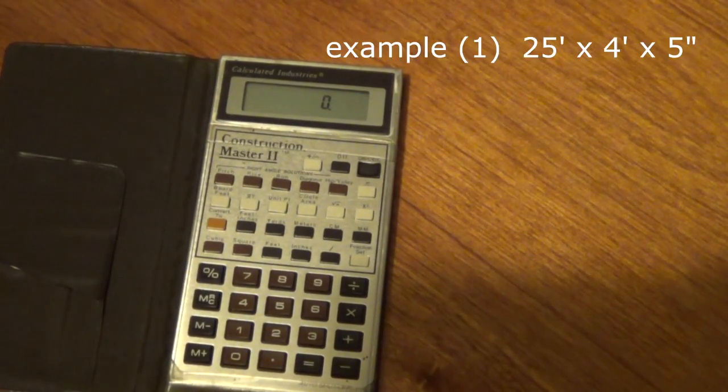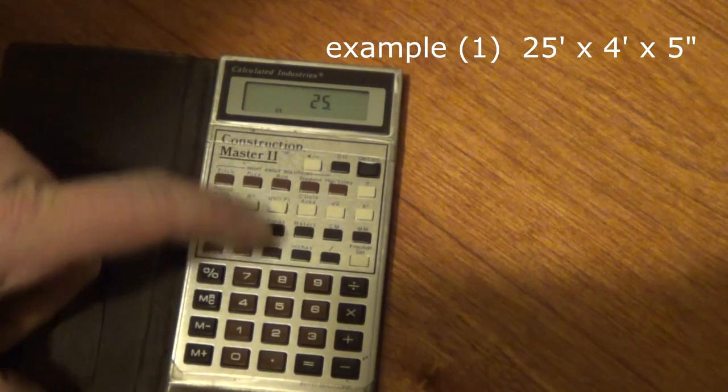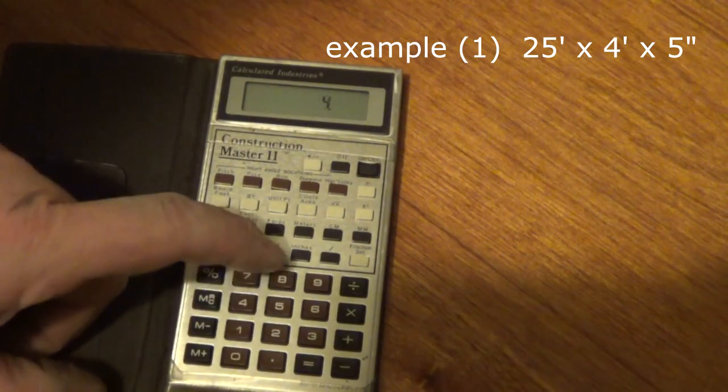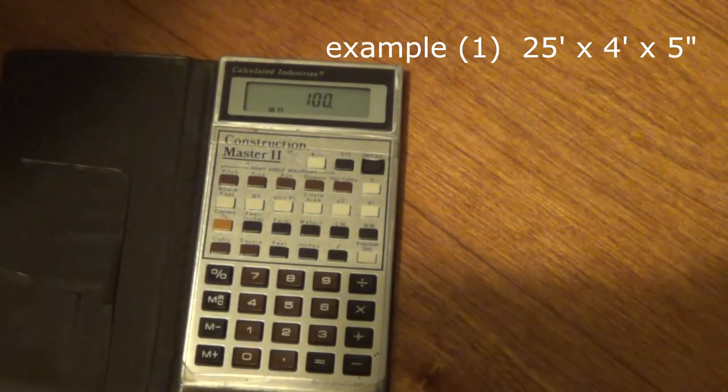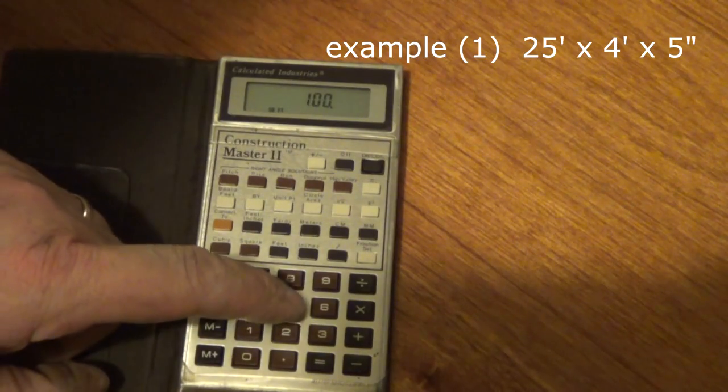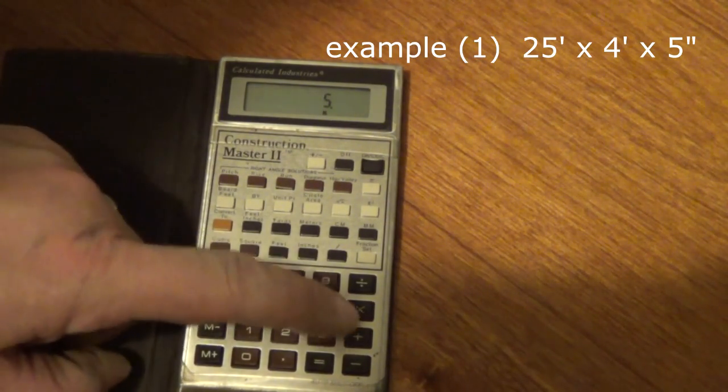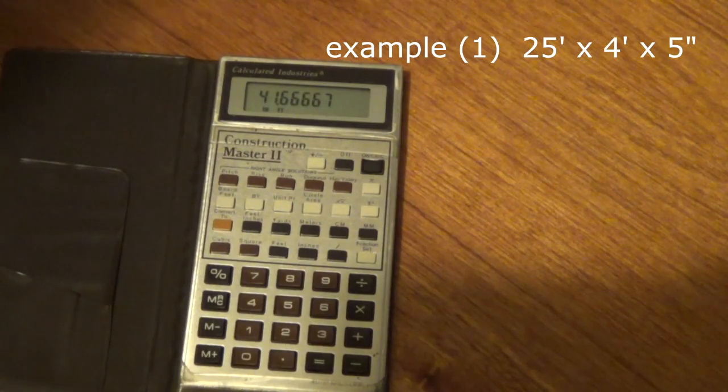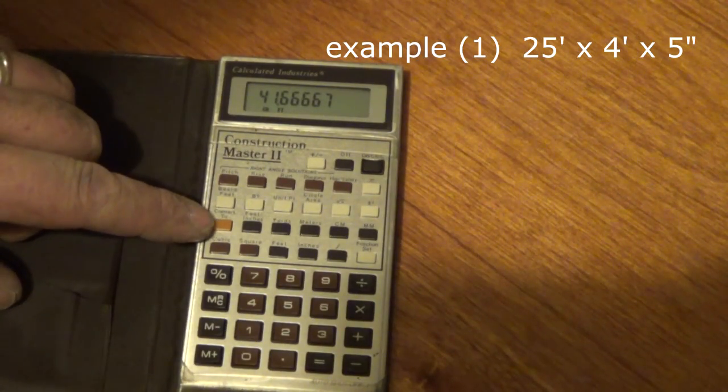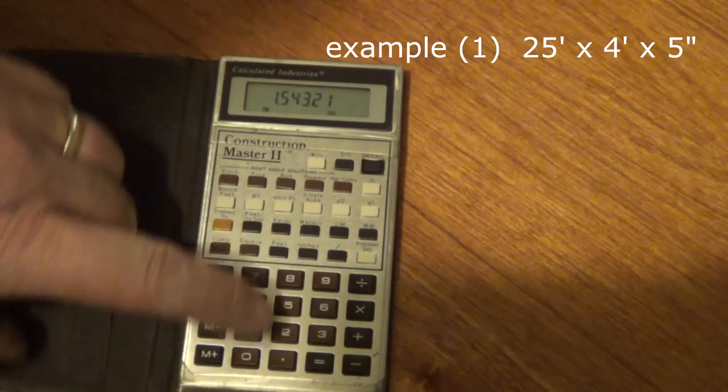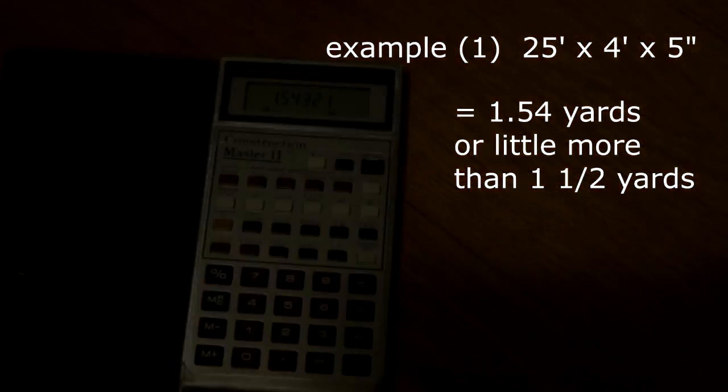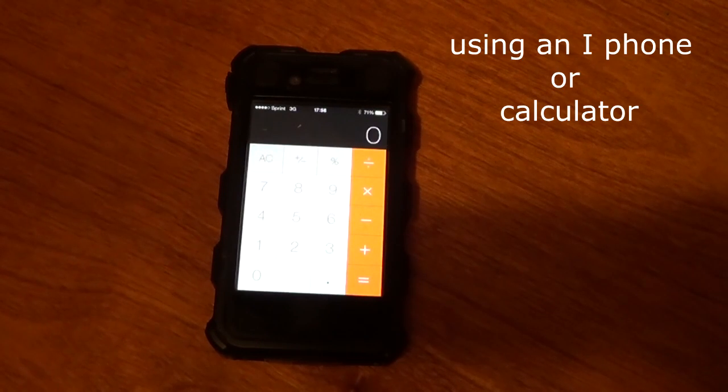So Dave, 25 feet. Okay Mike. 25 feet has a feet marker. So we put that in. Times 4 feet. 4 feet. Times 5 inches deep. Okay. 5 and it has an inches button. So we put that in there. And we hit equal. It gives us a total of 41.66 cubic feet. And we convert that to yards by just putting convert yards. And it converts it to 1.54 cubic yards of concrete.